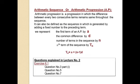In last lecture, we saw that arithmetic progression is a progression in which the difference between every two consecutive terms remains same throughout the sequence. Or in other words, you can say that arithmetic progression is a progression in which every term is obtained by adding a fixed number to the preceding term.